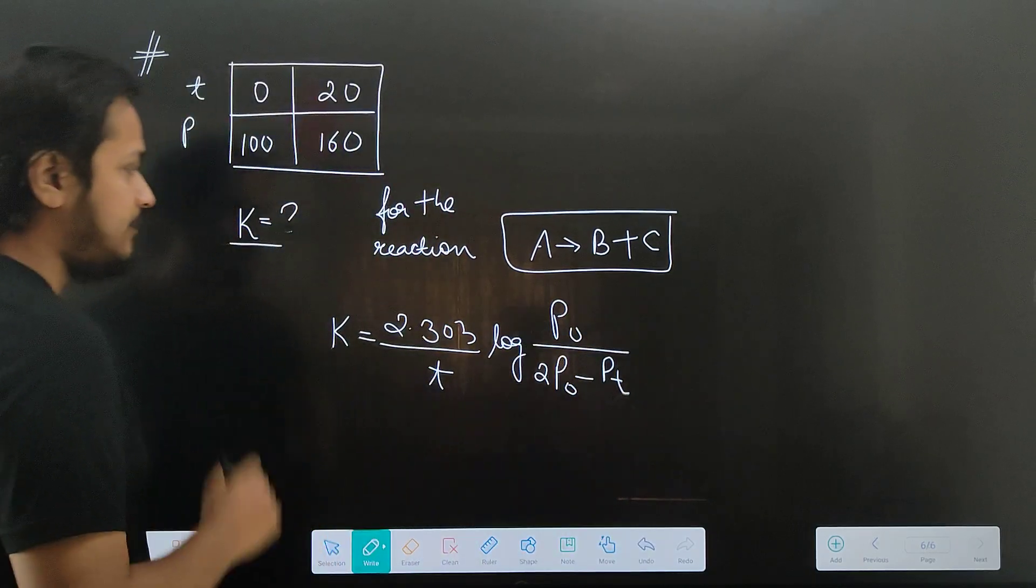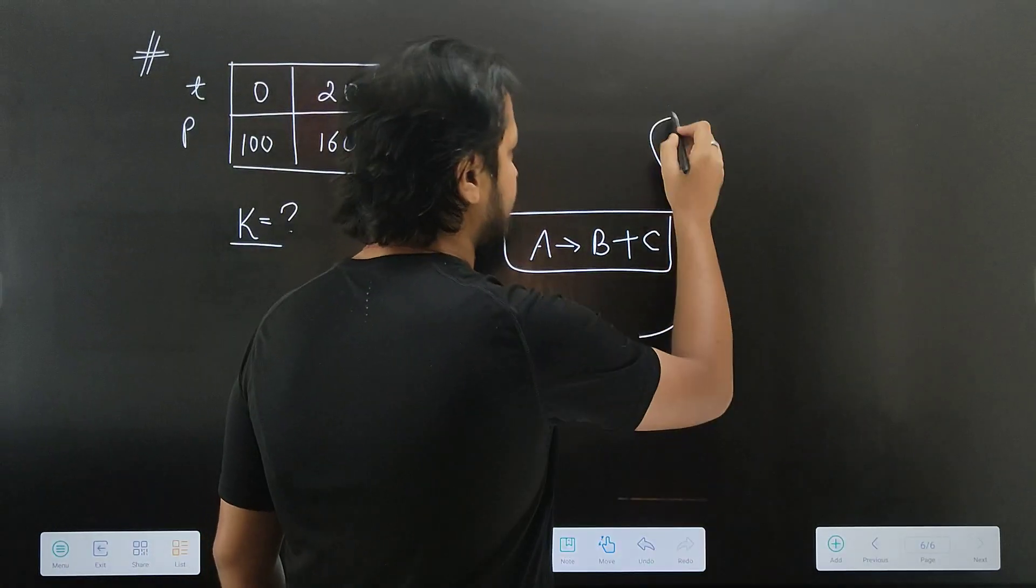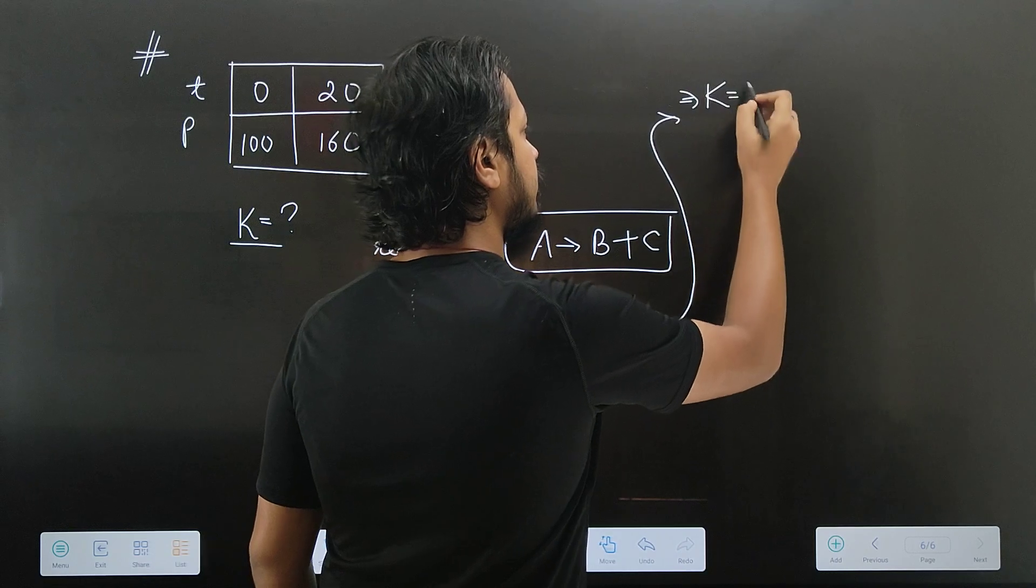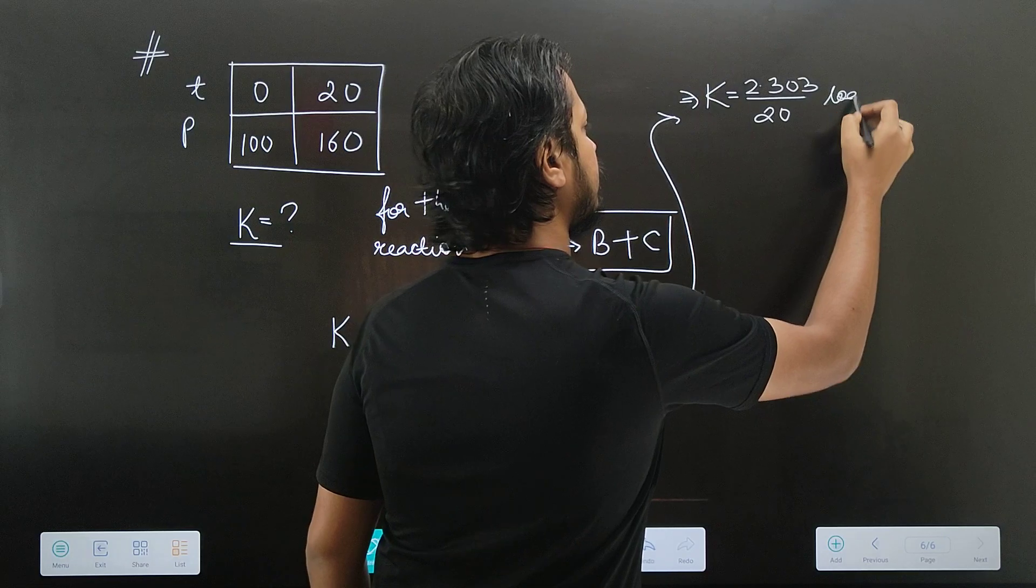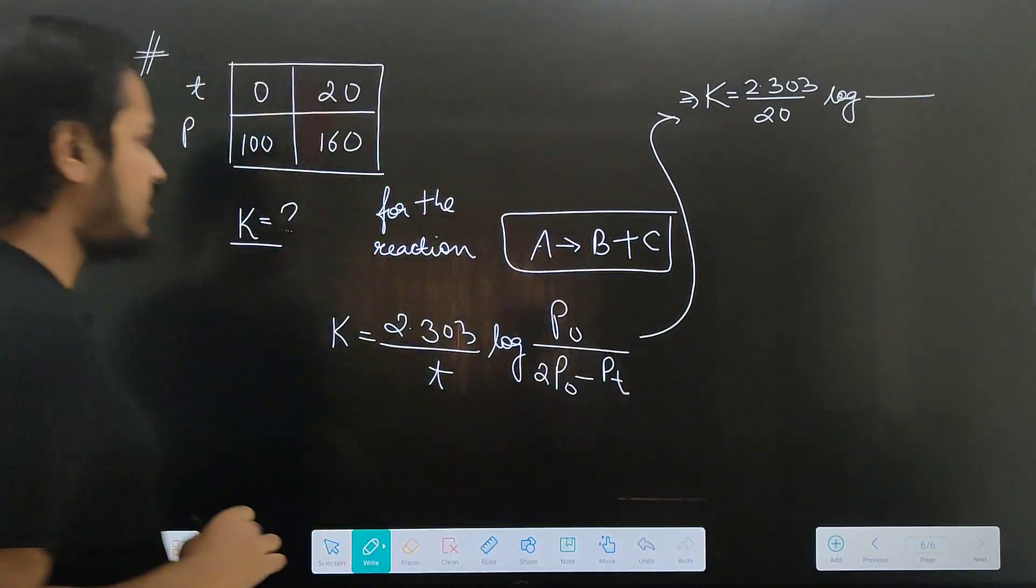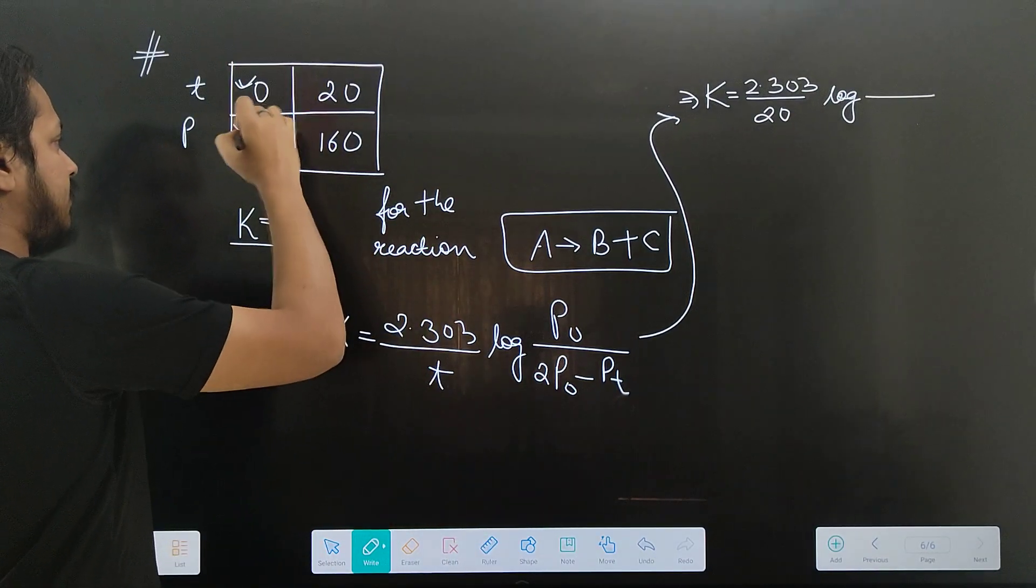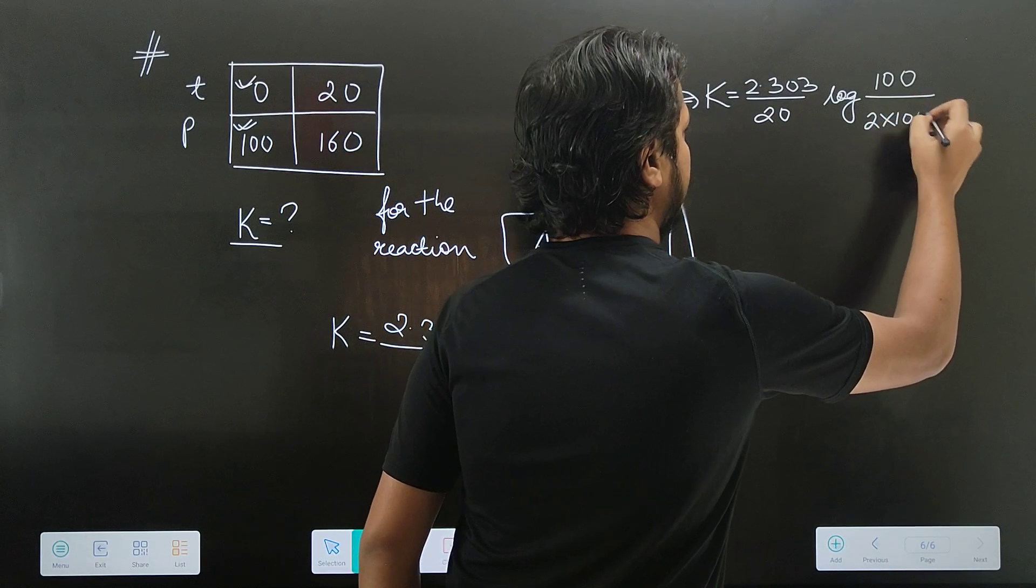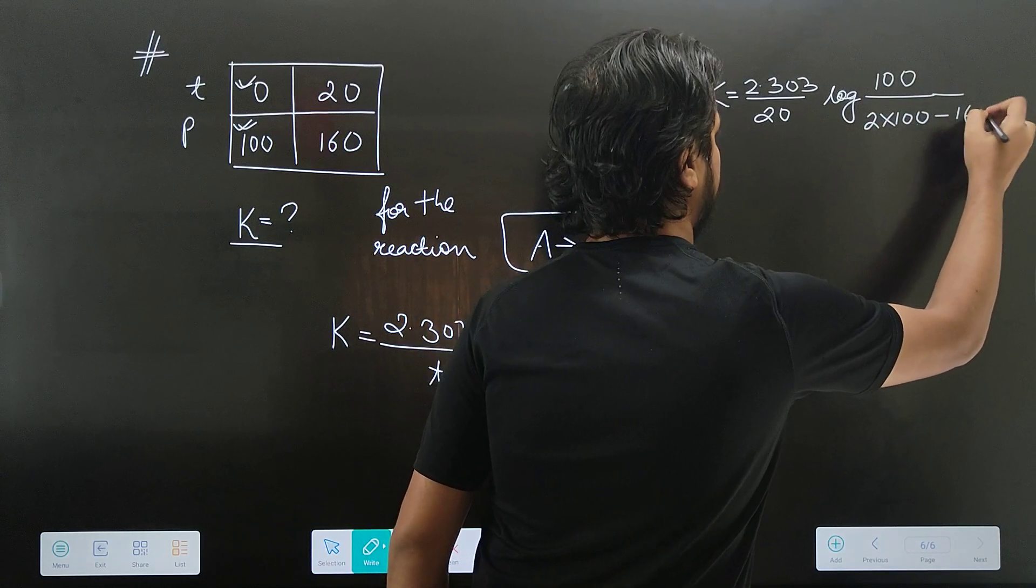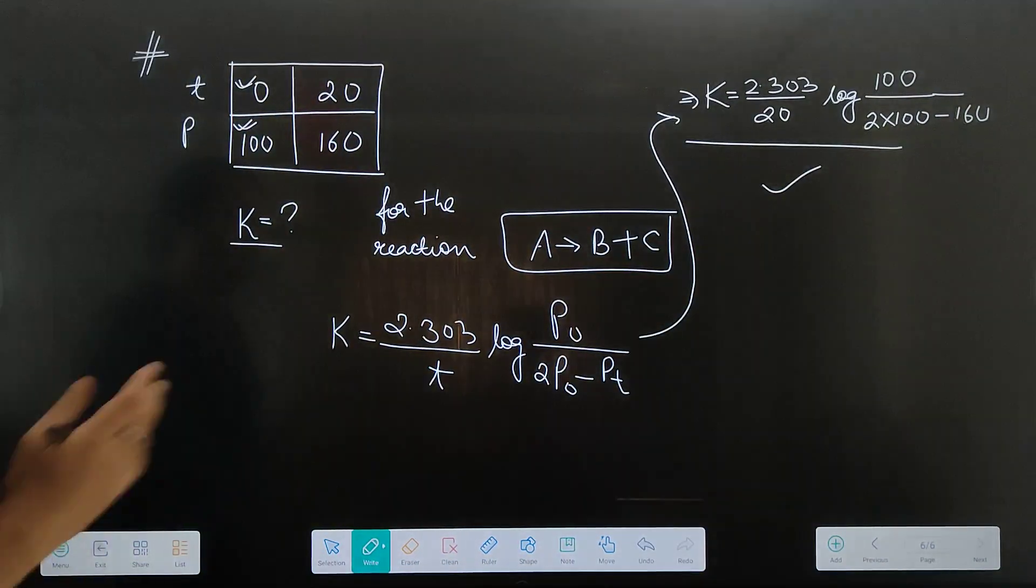You plug in: 2 times 100 minus 160. Calculate using this expression.